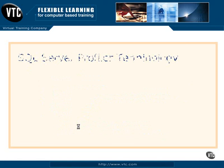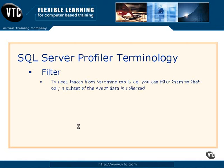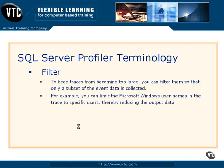If I turn Profiler on, it's going to catch everything that happens to this SQL Server — that can be a lot of data. So I can filter the information, and this is going to keep my trace from becoming too large, so I'm only getting a subset of what's actually happening on that server. For example, I can limit the events I'm capturing to a particular Windows username — if there's a user I want to watch, to find out why they're having trouble or seeing slow response, I can filter by that Windows username or user group. There are a lot of ways to limit or filter my subsets.